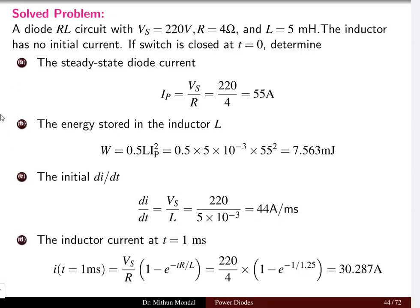We can find the inductor current at time t equal to one millisecond. The current i in the circuit at time t equal to one millisecond from this formula Vs by R times 1 minus e to the power minus tR by L. Here the time t is substituted as one millisecond and other values of Vs, R and L we will be substituting which gives 30.287 amperes.